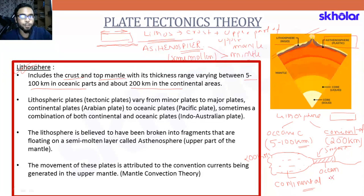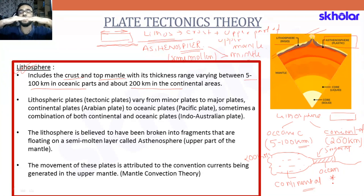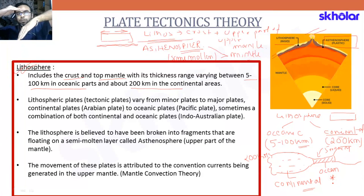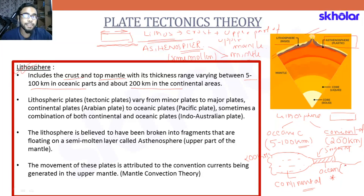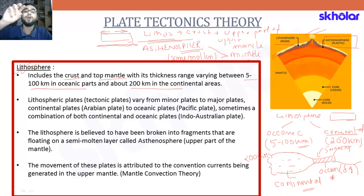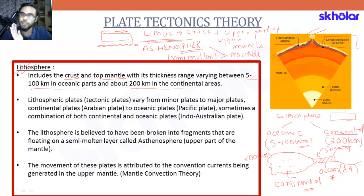Regarding density: when the continent and ocean floors meet, the ocean floor moves down, meaning ocean floor has more density. Even though the thickness of continents is much more, the density of the ocean floor is much more. So the ocean is less thick but much more dense, while the continental lithosphere is much thicker but lesser in density.